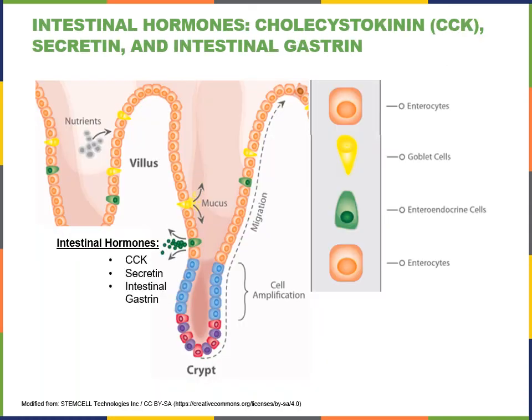During the intestinal phase of gastric secretion, acidic chyme entering the duodenum initially stimulates the production of intestinal gastrin from the enteroendocrine G cells in the duodenum, leading to increased gastric juice secretion. However, when the small intestine starts to fill with chyme, mechanoreceptors detect stretching of the duodenum and stimulate the enteroendocrine I cells that produce CCK and the enteroendocrine S cells that produce secretin. CCK and secretin then have the negative feedback effect of decreasing gastric juice secretion.